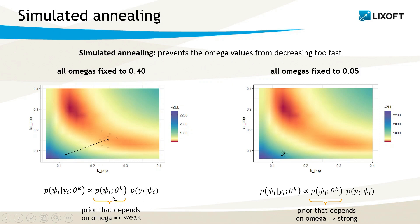This part here represents the information provided by the data, and this part can be seen as a prior provided by the population parameters as a previous iteration. A large omega value is equivalent to a weak prior, so the individual parameters that are sampled, that we see here with grey stars, are influenced a lot by the data and not so much by the population parameters of the previous iteration. So this means that we can do big steps in the parameter space.